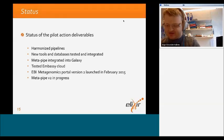Here is the status of the pilot action. The pipelines have been harmonized. New tools and databases have been tested and integrated. MetaPipe has been integrated into Galaxy. Embassy Cloud has been tested. EBI metagenomics portal version 2 was launched in February, and MetaPipe version 2 is currently in progress.